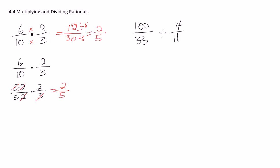You can see we get the same answer whether we multiply first and then simplify, or if we simplify and then cancel things out. That's the method we're going to use to solve rational expressions, because it's going to be too tough to try to multiply and foil things out. So we're going to use this second idea of simplifying first and then doing a bunch of canceling.